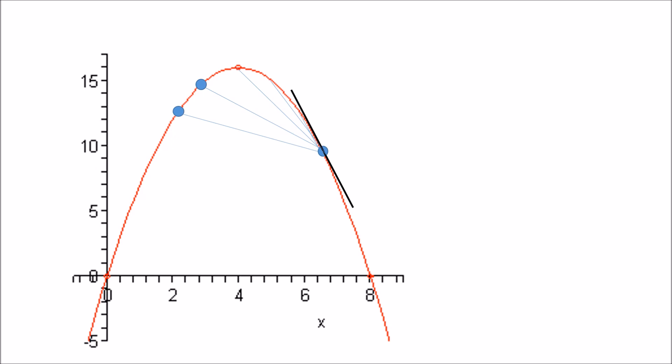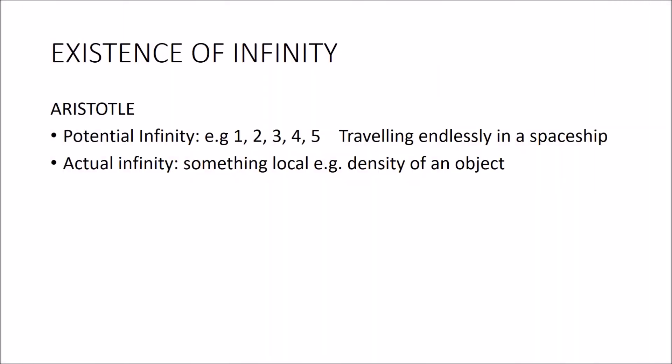Let's explore the existence of infinity. We're going to look at Aristotle's potential infinity: if we look at 1, 2, 3, 4, 5, 6, 7 and keep going, where does that number sequence stop? Potentially it could keep going forever — we could count forever and ever. Think about the analogy of traveling endlessly in a spaceship. There's also something called an actual infinity — something more local. For example, if we consider the density of an object so dense that it would have an infinite density — this sometimes comes into play when scientists look at black holes.